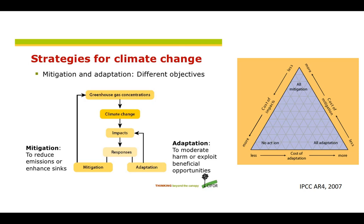Strategies to mitigate and adapt to climate change range from individual to local, national, and global efforts. Adaptation happens in a variety of ways — through changes in government policies, technological advances, and individual actions such as insulating the attic to stay cool during heat waves, or raising and reinforcing a house in a hurricane-prone area.